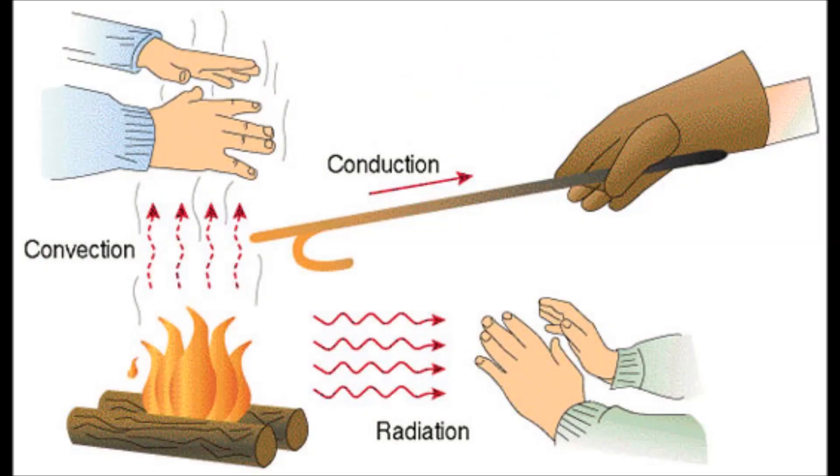Heat can travel from one place to another in three ways: conduction, convection, and radiation. Both conduction and convection require matter to transfer heat. If there is a temperature difference between two temperatures, heat will always find a way to transfer from a higher temperature to the lower.